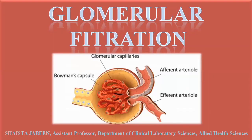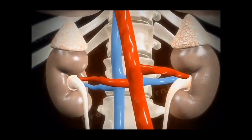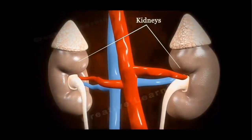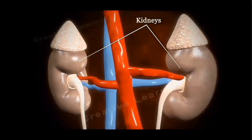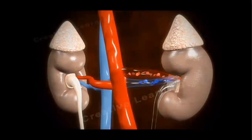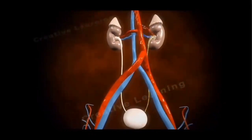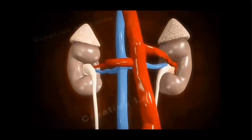This video is about glomerular filtration — how the process of filtration takes place by the glomerulus. The glomerulus is part of the nephron, and nephrons make up the kidneys. The main filtration organs in the human body are the kidneys. Blood enters the kidneys for filtration; about 20 to 25 percent of the blood coming from the heart through the renal artery enters for filtration. Waste products and excess water are removed in the form of urine.